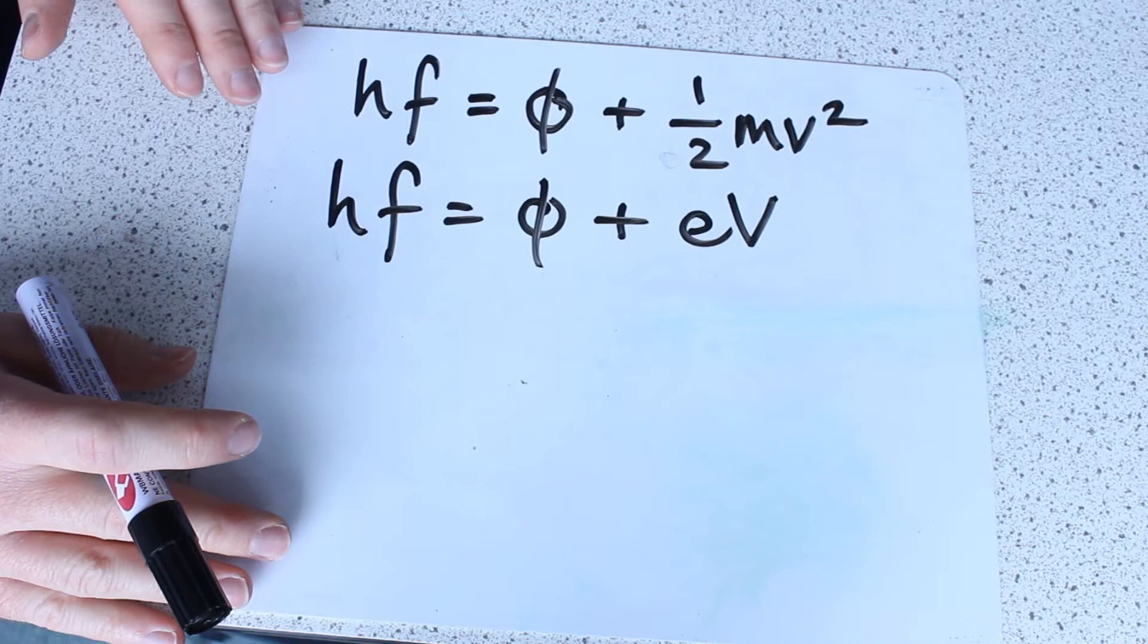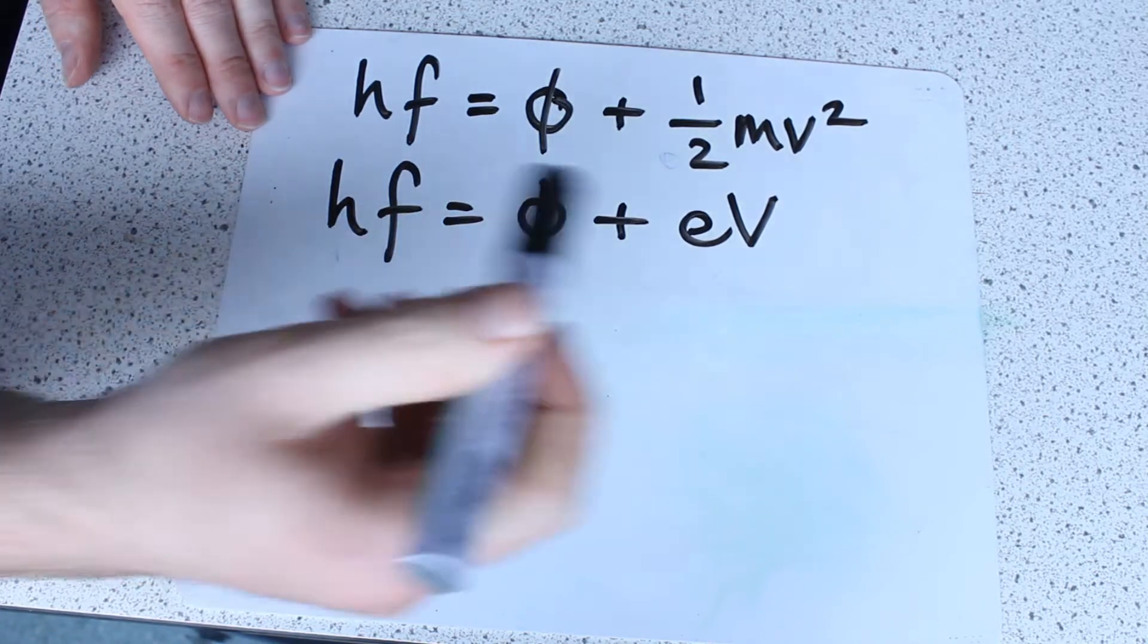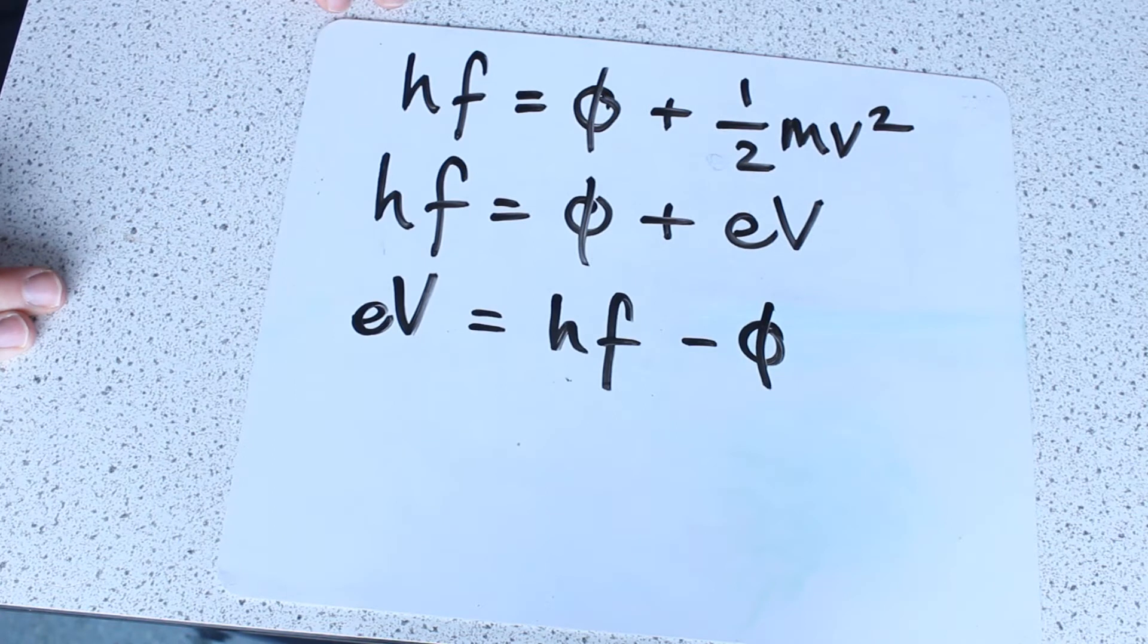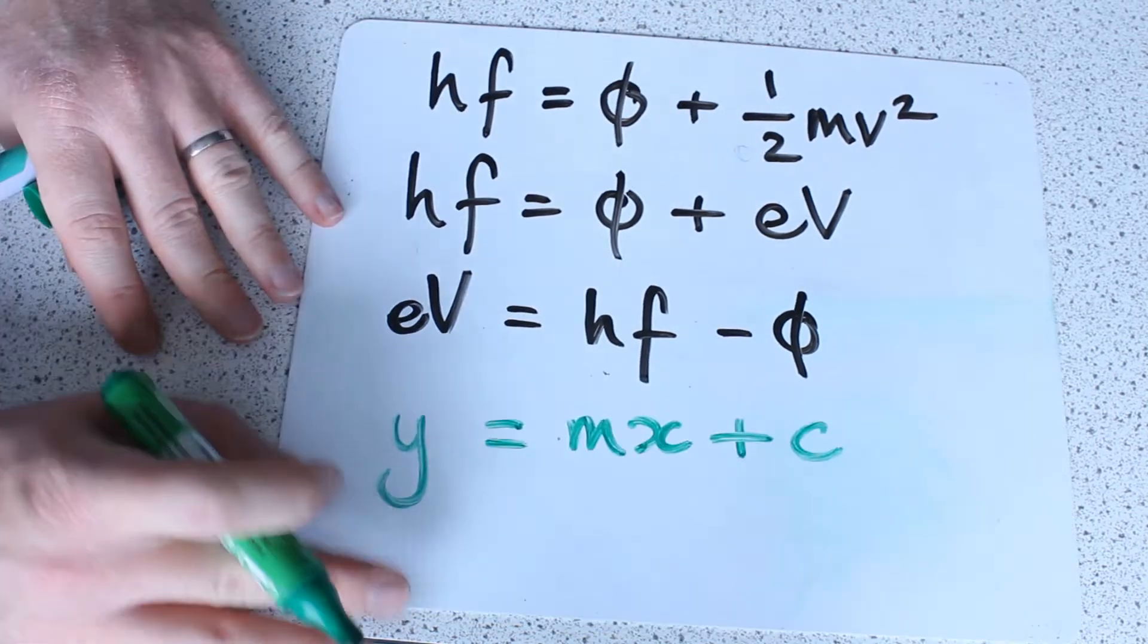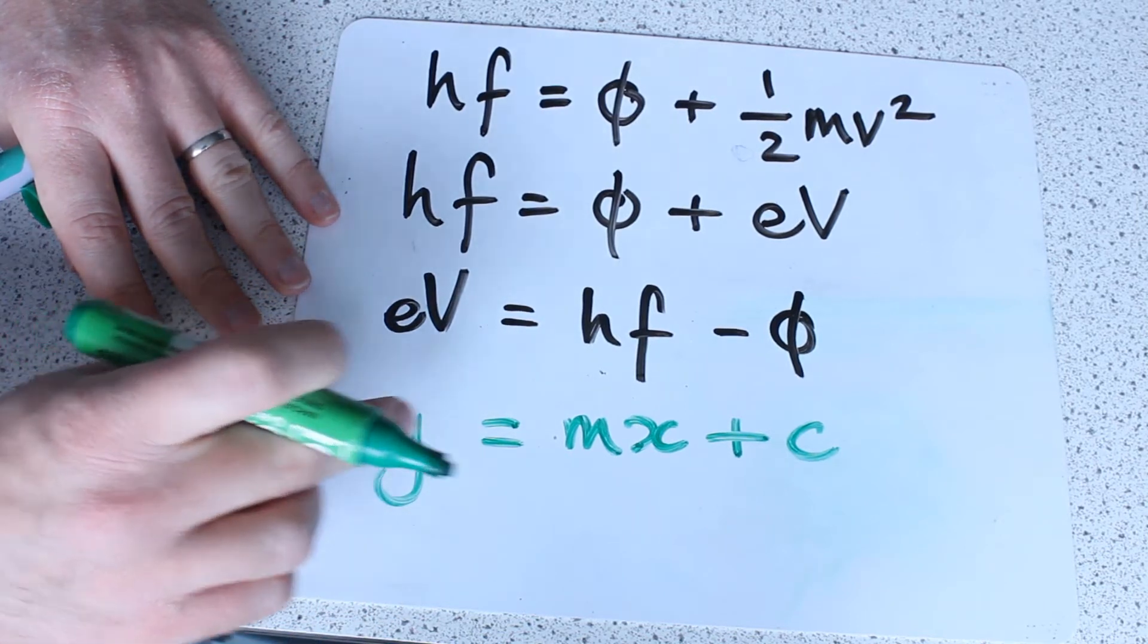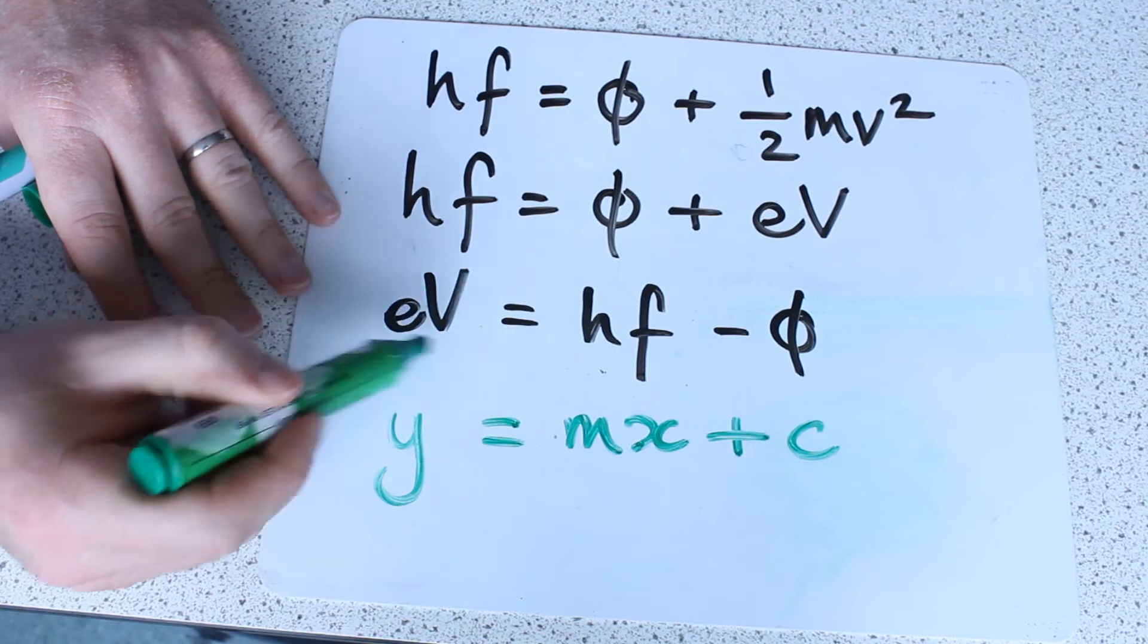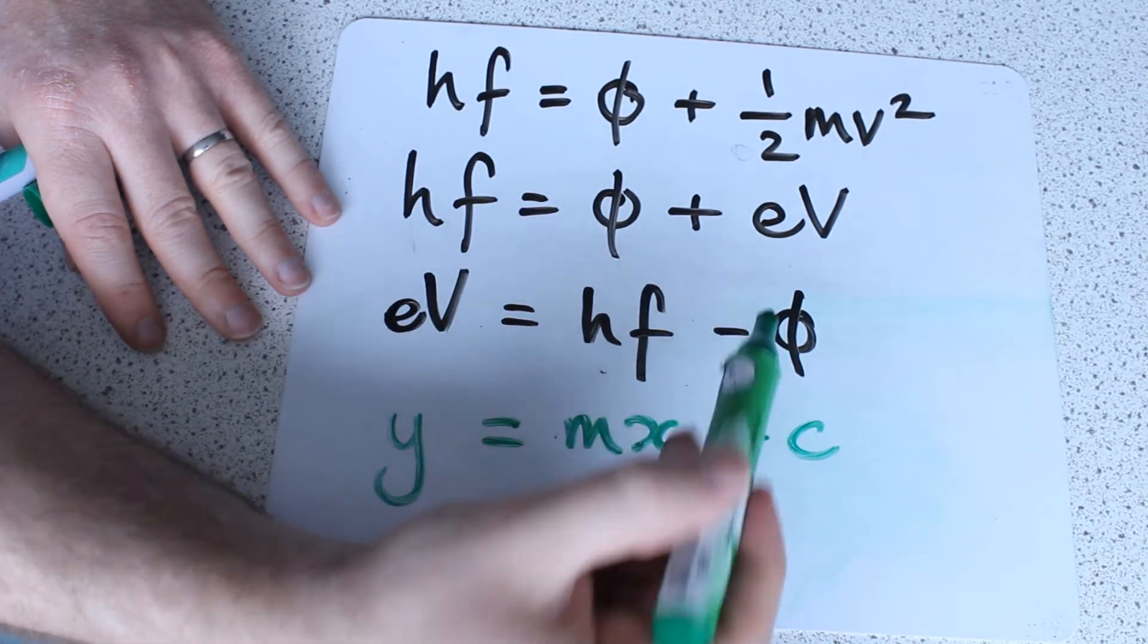So let's think what can we vary. We can vary this and put that on our X axis. And we're measuring this so we can put that on our Y axis. So I can very quickly rearrange to this, simply moving across the phi. So I hope you can now see this has the same form as our equation for a straight line, Y is MX plus C. So we're going to put this on our X axis, the frequency. This on our Y axis. And this work function will be the Y intercept.